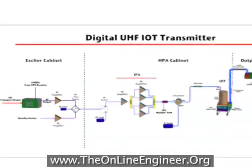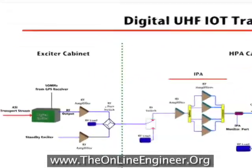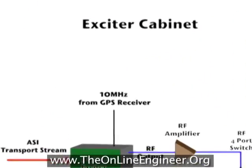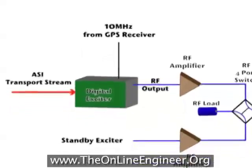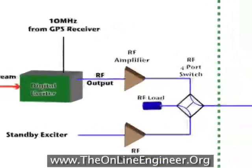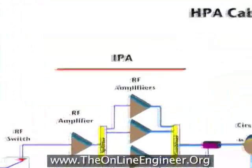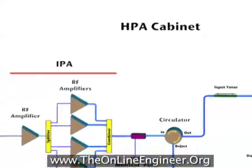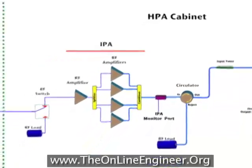Today's UHF Digital Television Transmitters are made up of many different systems that work together in order to create and transmit the over-the-air DTV signal that viewers at home can watch. This series of videos will provide you with an overview of these different systems and how they relate to each other.